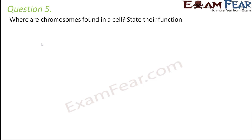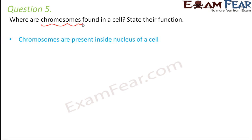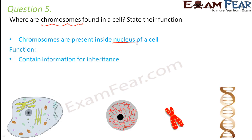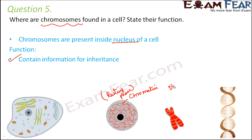Question number five: where are chromosomes found in a cell, and what is their function? Chromosomes are found inside the nucleus of a cell. Their main function relates to cell division, as they contain the information for inheritance. The chromatin threads — which contain DNA, RNA, and proteins — exist during the resting phase of the cell. During the dividing phase, these chromatin threads condense together to form rod-shaped structures called chromosomes.